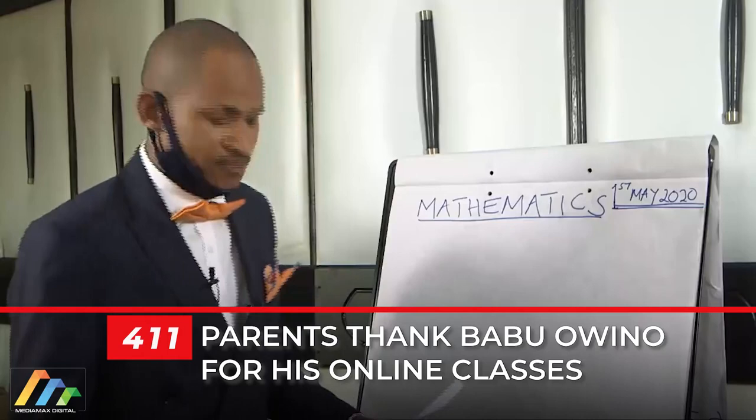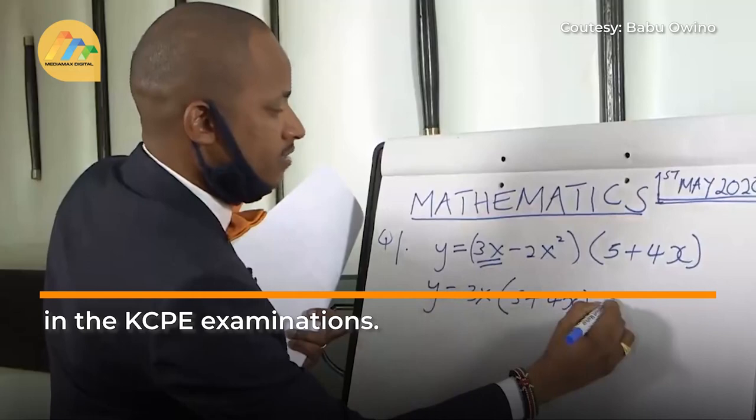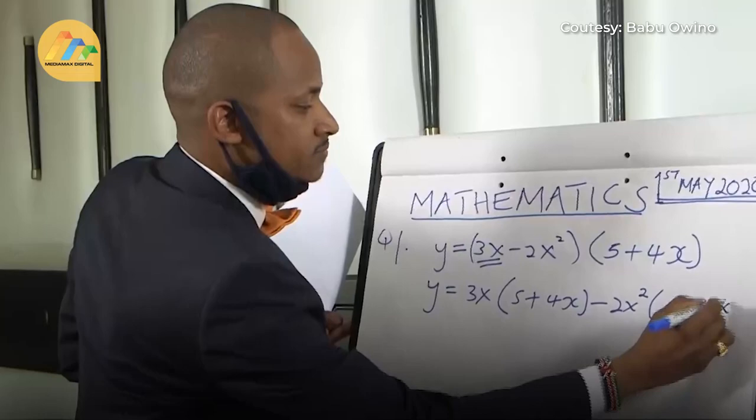Question number one, the other side, which is 5 plus 4x, minus 2x squared, into 5 plus 4x.